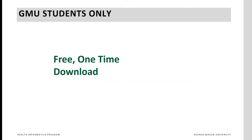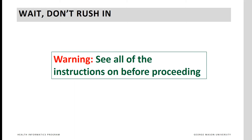George Mason University students in the Health Informatics courses can have a free one-time — notice, only one-time — download of the Microsoft SQL software. Many things can go wrong. Since you have only one free download, please read all of these instructions and make sure you download the right version and install it correctly. This is not something you can redo; it must be done correctly the first time around.